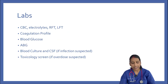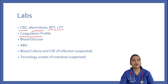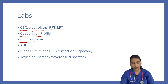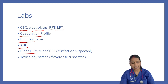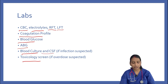Coming to laboratory evaluation: routine CBC, renal function tests, and electrolytes must be performed. A coagulation profile and blood glucose must be checked. Arterial blood gas must be analyzed for PaCO2 and PaO2. Blood culture and CSF must be done if infection is suspected, and a toxicological screen if overdose is suspected.